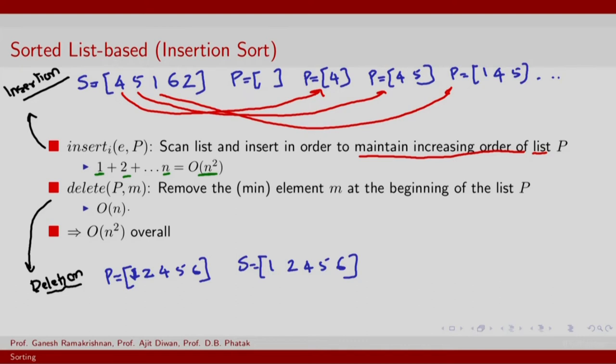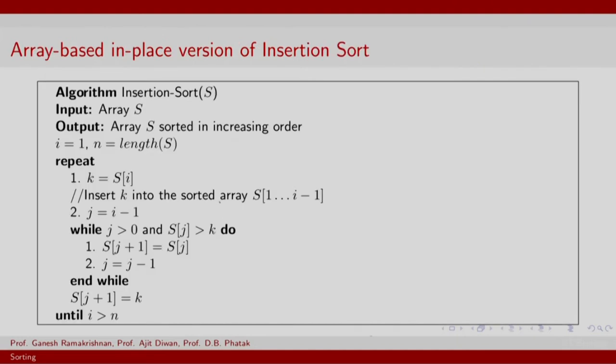Now, this naive implementation of insertion sort should ring some bells. You should probably consider getting the sorted content of P straight away into S without having to populate a separate P. Because you notice that in the process of obtaining a sorted S, you have actually first created a sorted P. That gets us to the in-place version of insertion sort. As explained earlier, you will still have S which is 4, 5, 1, 2, 3. The output is to get the same elements in S but sorted in increasing order.